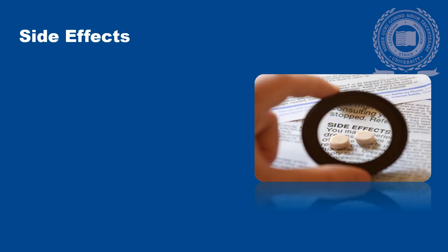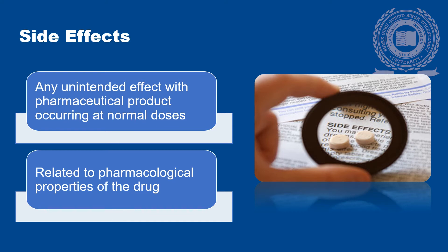Side effects: these are any unintended effects of a pharmaceutical product occurring at normal doses which are related to the pharmacological properties of the drug. Generally, they are not serious but may occasionally be hazardous. Side effects can be predicted from the pharmacological profile of a drug and are known to occur in a given percentage of drug recipients. The reduction in dose usually ameliorates the symptoms. An effect may be therapeutic in one context but a side effect in another — for example, codeine used for cough produces constipation as a side effect, but the latter is its therapeutic effect in traveler's diarrhea.